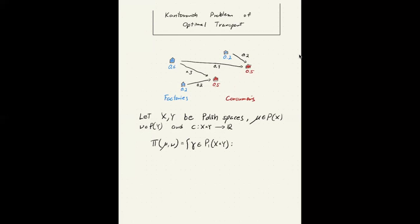Such that the first and second marginal are given by precisely μ and ν. So if I push forward γ down to X, then I get μ. And if I push forward γ down to Y, then I get ν. So π_X and π_Y here is just the natural projections from the product down to X and Y respectively.